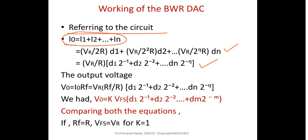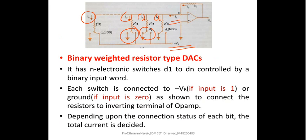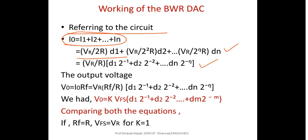I1 equals Vr divided by 2R times D1. As long as D1 is closed and connected to Vr, that holds good. If the switch is at ground level, then the corresponding current I1 is zero. The same holds for the other resistors: Vr divided by 2R times D1, plus Vr divided by 2-squared R times D2, plus Vr divided by 2-cubed R times D3, and so on, up to N bits.